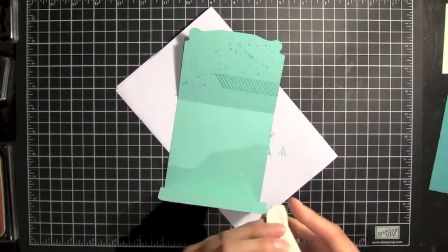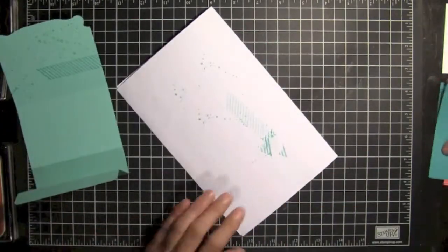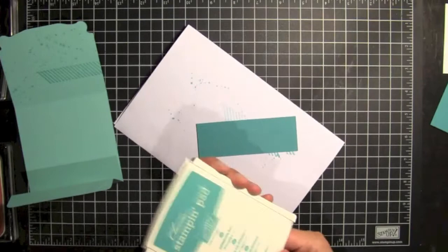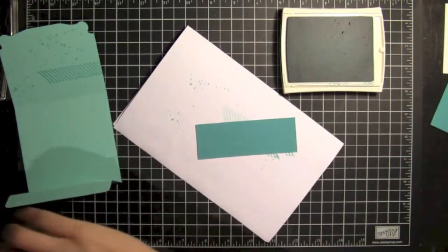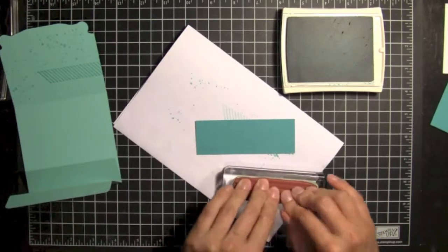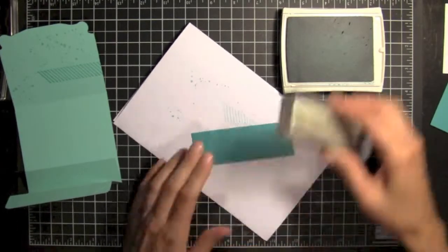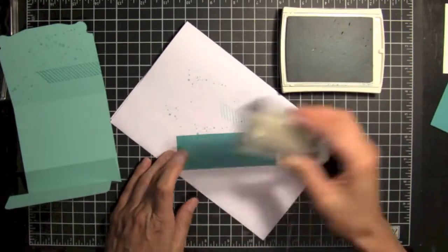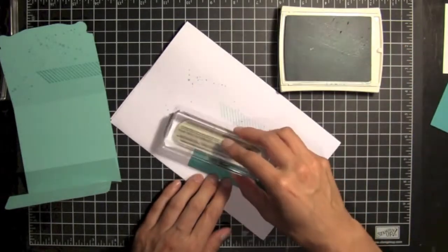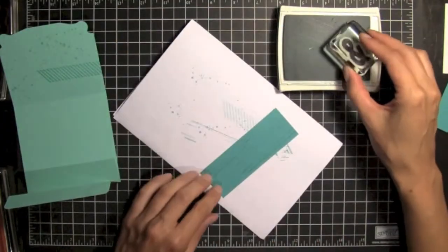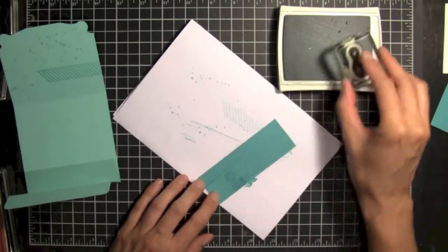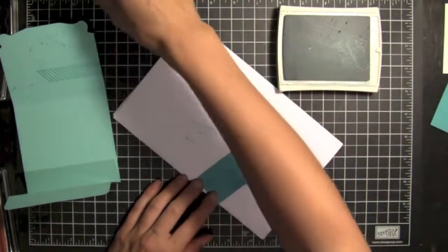All right, now we'll take a piece of Bermuda Bay and some Bermuda Bay ink. And we'll continue using the Gorgeous Grunge set. We'll use this stamp. I'll just do one here, one over there. And then we'll use the ampersand. It's kind of a fun stamp to use.